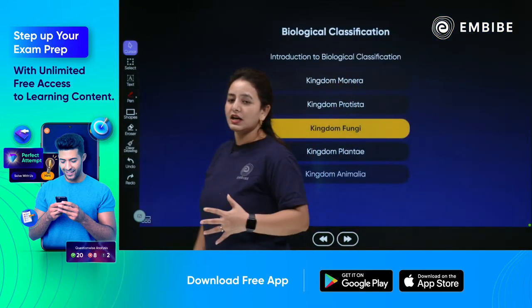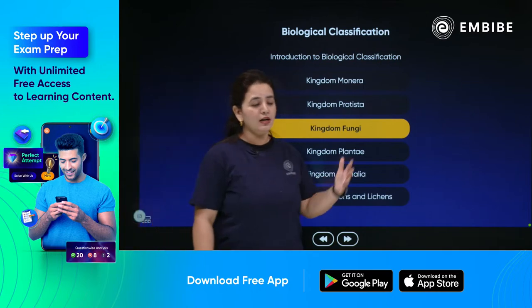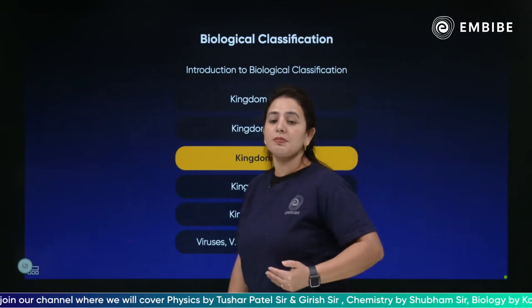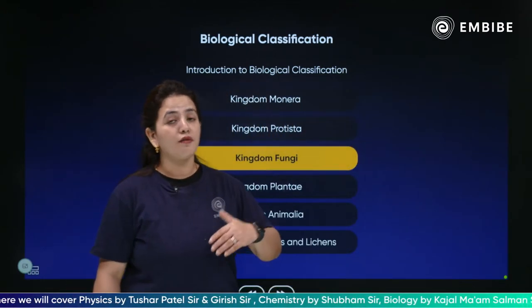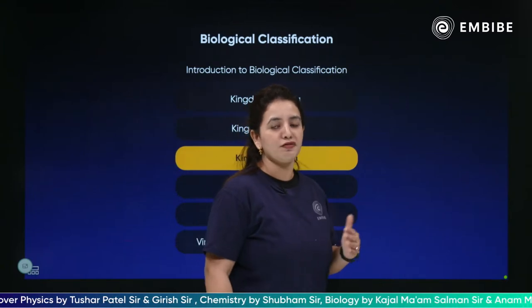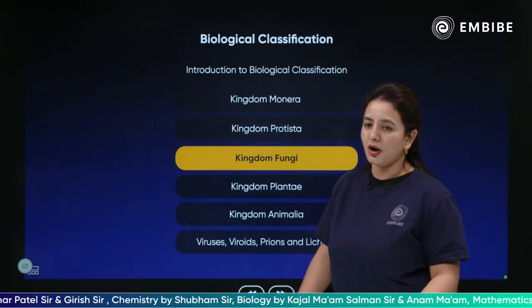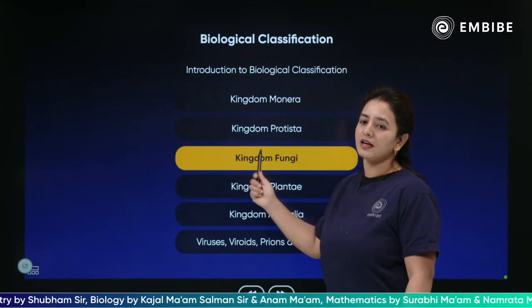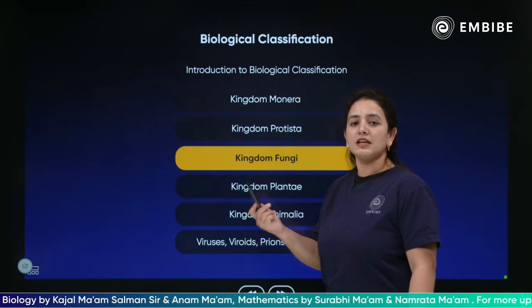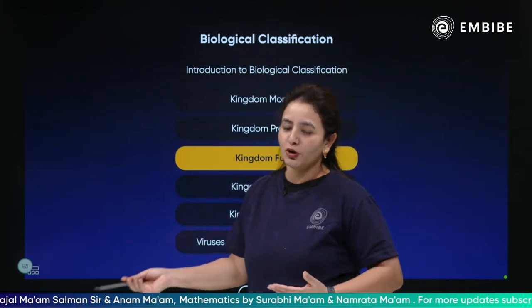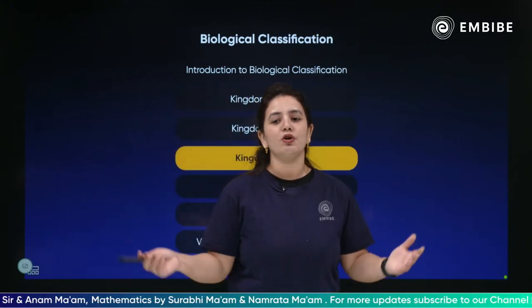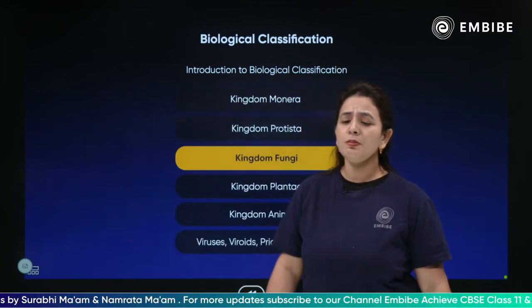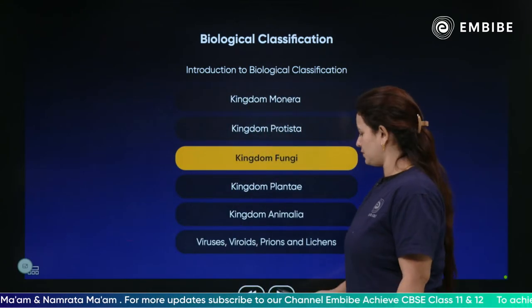All the topics which have been already covered and will be covered are present here. We have discussed about the different classification systems given by different scientists, their drawbacks and their features. We have discussed about Kingdom Monera and Kingdom Protista. Now we are still on Kingdom Fungi. Then we are going to start about Kingdom Plantae. Your zoology ma'am is going to discuss about Kingdom Animalia. And we are also going to discuss about viruses, viroids and prions.